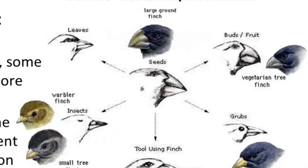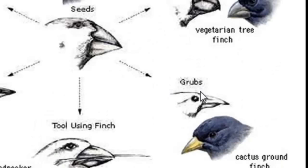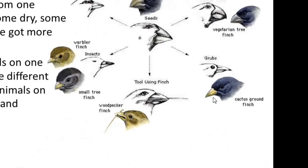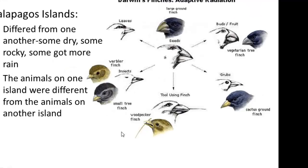And then this beak — it says it eats grubs, so it's really pointy and straight. That's probably so it can get into trees and reach the grubs and insects it eats, so it needs a longer beak. And then this one is a tool-using finch — he uses a tool. He has a beak that can help him hold a little tool, probably like a branch from a tree, and use it to stick into a hole in the ground or in a tree to get bugs out to eat. Those are examples of the variations he saw in birds.